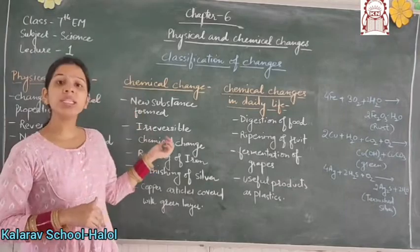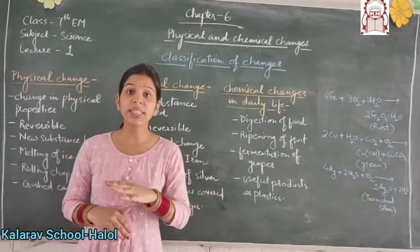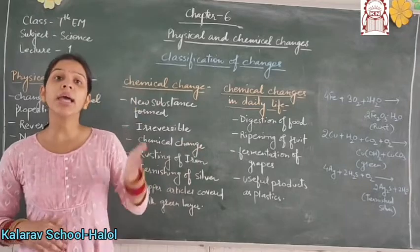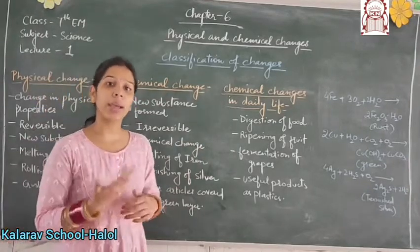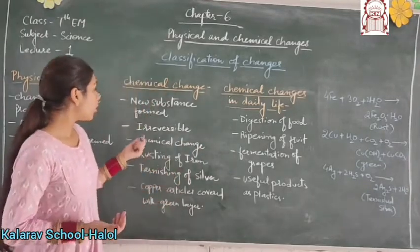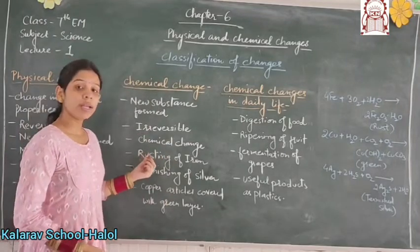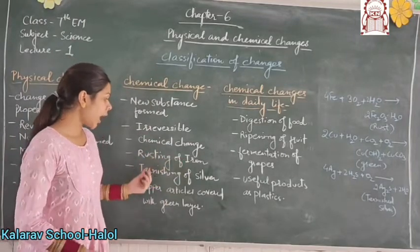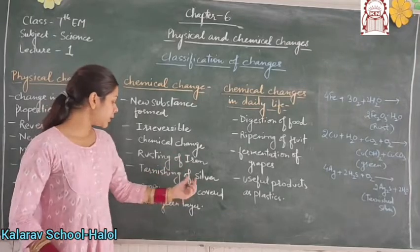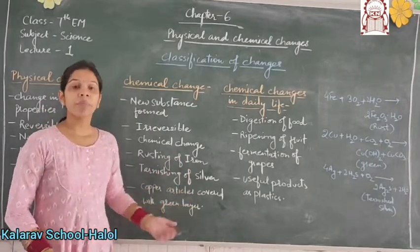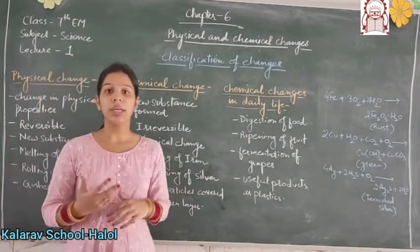Chemical changes are irreversible in nature, which means we cannot get the initial state of the substance during a chemical change. For example, chemical changes include rusting of iron, tarnishing of silver, and copper articles covered with a green layer. These are examples which show chemical change.